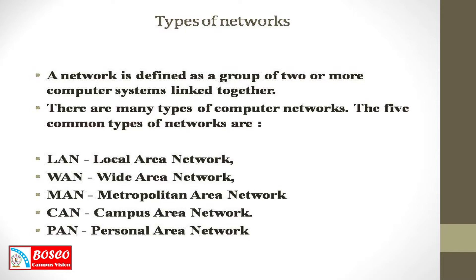Now let's discuss the types of networks. There are many types of computer networks. The five common types of networks are: first, LAN — Local Area Network; second, WAN — Wide Area Network; third, MAN — Metropolitan Area Network; fourth, CAN — Campus Area Network; and fifth, PAN — Personal Area Network.